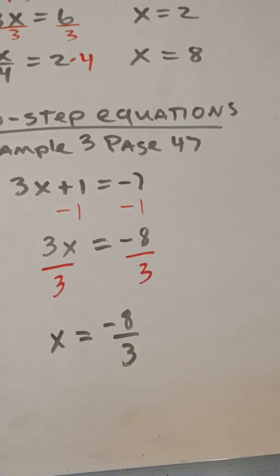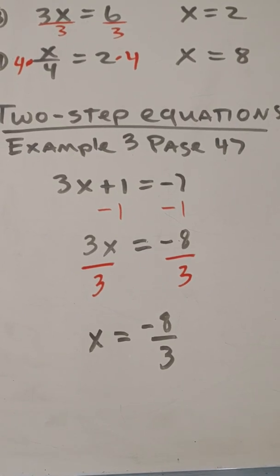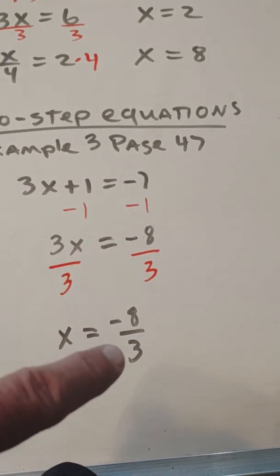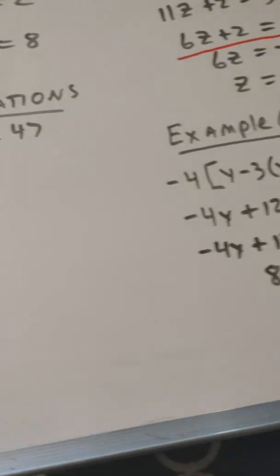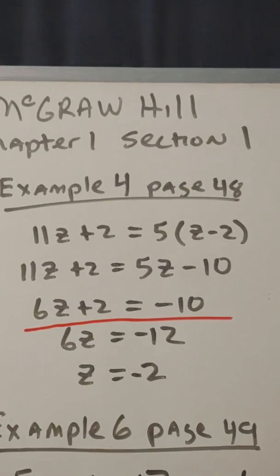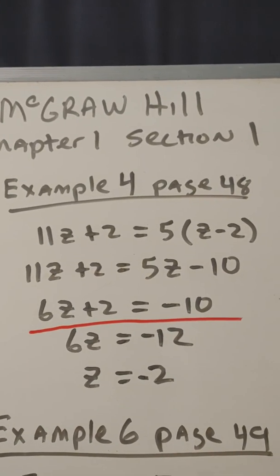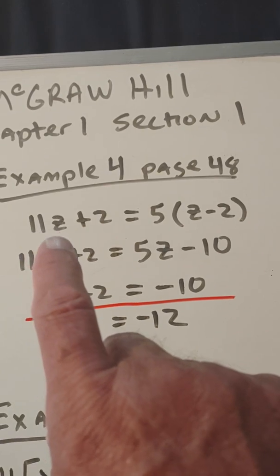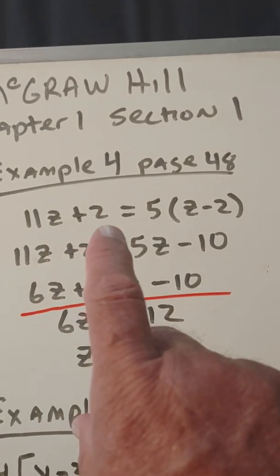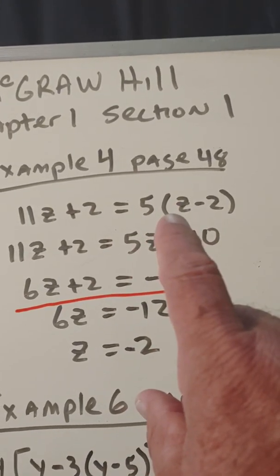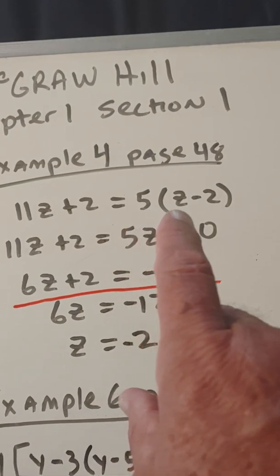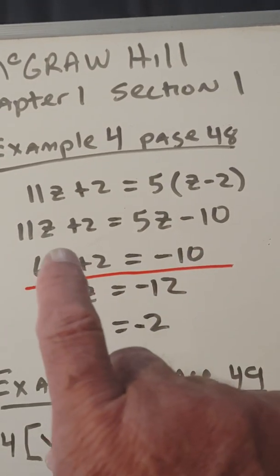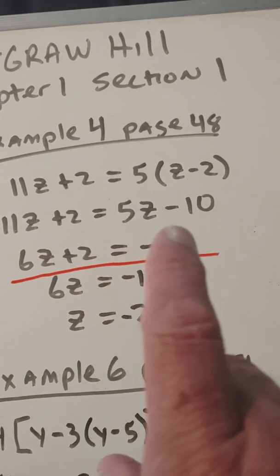Once you understand the process of solving multi-step equations, the biggest mistakes you're going to make are arithmetic. Like, in terms of here, you're going to forget to carry the negative, which makes this a negative 8-thirds answer. We come over here to example 4, and this is our first of a multi-step problem. So, what we have here is we're not in two-step form, because in order to be in two-step form, it should be the variable on the left, added or subtracted to some number, equals to another number, not a variable. So, the first thing we've got to do is get rid of these parentheses, so we're going to distribute the 5 to the z and the minus 2. 5 times z is 5z, 5 times negative 2 is negative 10. So now we have 11z plus 2 equals 5z minus 10.